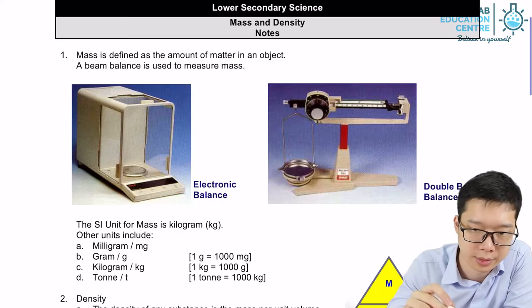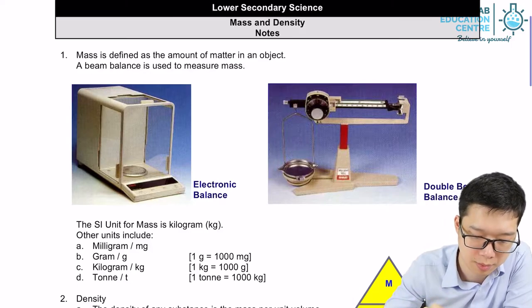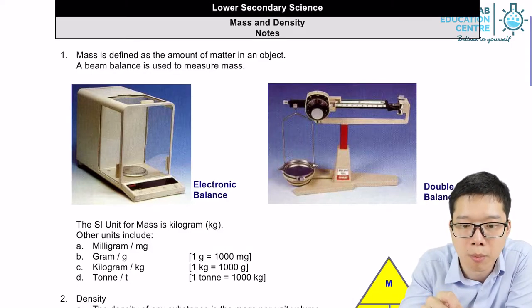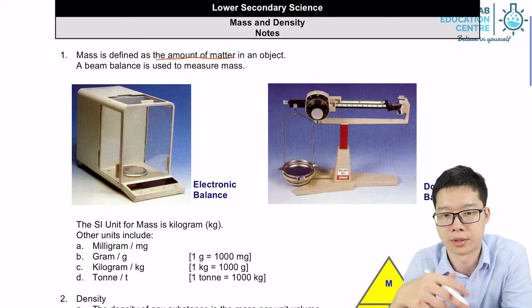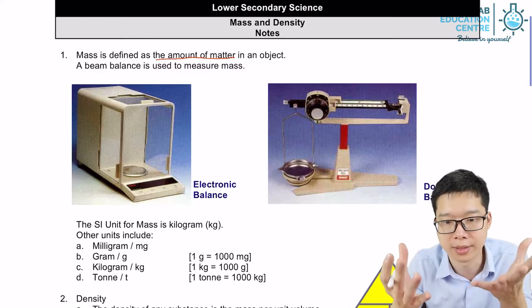So mass, what does mass mean? Mass is defined as the amount of matter in an object. So the more matter it is, the heavier it is.